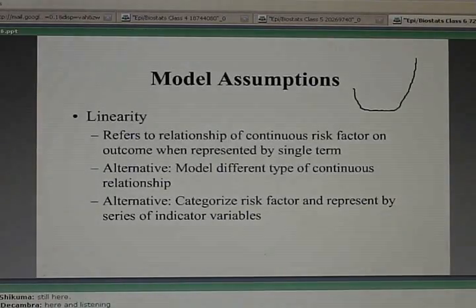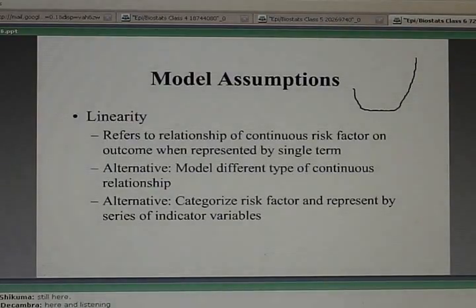The risk might start out high, go lower if you have normal blood pressure, then become higher again if you have high blood pressure. You'd like your model to reflect that non-linear relationship between, say, blood pressure. So a linearity assumption would not be good to make for blood pressure if you're trying to describe the relationship between a continuous variable like blood pressure and your outcome.